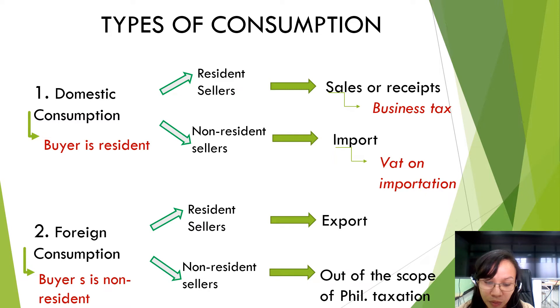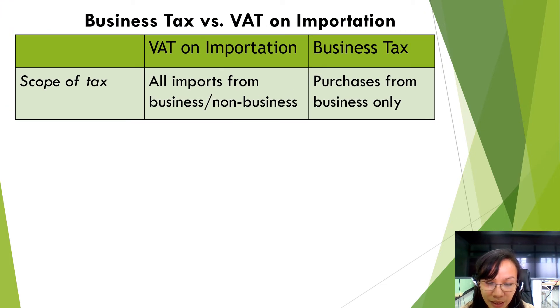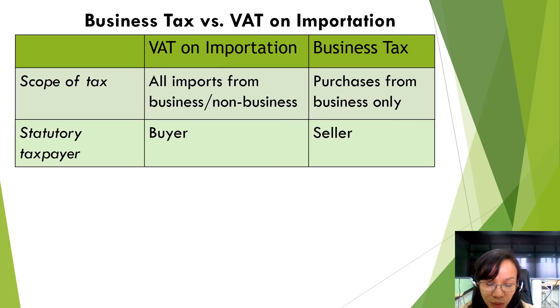In this session, we will focus on domestic consumption. We will differentiate the two classifications: VAT on importation and business tax. The scope of VAT on importation is applied to all imports, whether the buyer is engaged in business or not. While business tax is applied to all purchases from sellers engaged in business only. The statutory taxpayer — the taxpayer obliged by the government to remit the taxes to the BIR — under VAT on importation is the buyer, while under business tax, the statutory taxpayer is the seller.